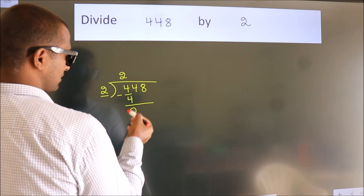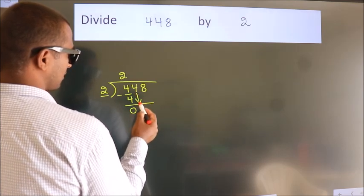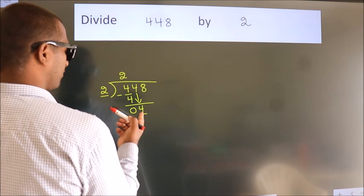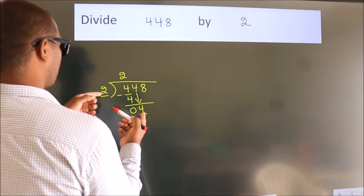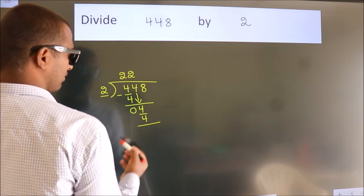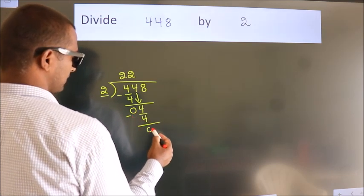After this, bring down the beside number. So, 4 down. When do we get 4? In 2 table. 2 2's 4. Now, we subtract. We get 0.